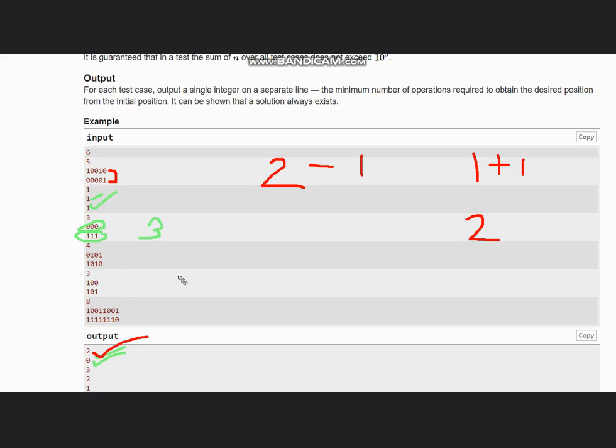For suppose I have one zero zero and one zero one, so in this case we check the first index - both are having one, so we will not count it. So our initial count would be zero and final count would be one in this case.